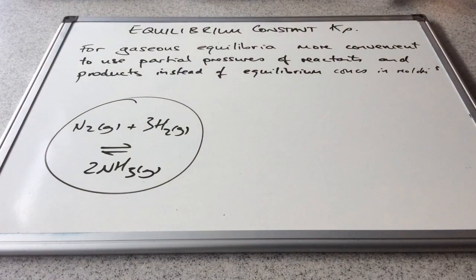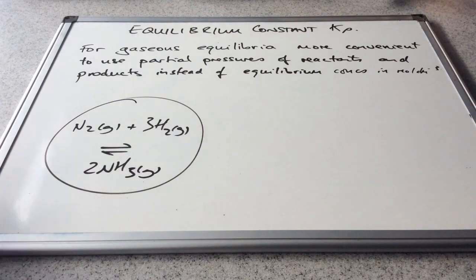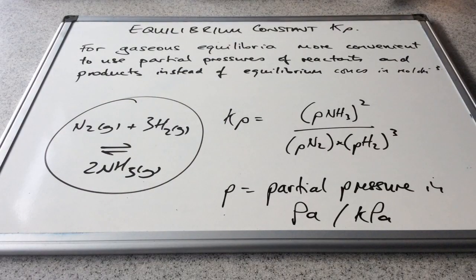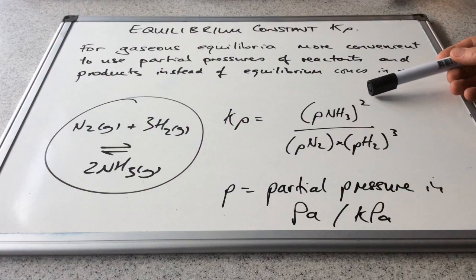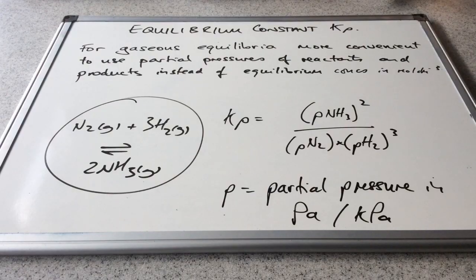For the purpose of this video I'm going to use the Haber process. We've got gaseous nitrogen and 3 moles of gaseous hydrogen in equilibrium with 2 moles of gaseous ammonia. At equilibrium we've got some of all of these substances in the container. So in terms of partial pressures, the equilibrium constant Kp equals the partial pressure of ammonia squared, all over the partial pressure of nitrogen multiplied by the partial pressure of hydrogen cubed. Hopefully you can see the similarities with Kc — equilibrium constants are the concentration at equilibrium of the products over the reactants.